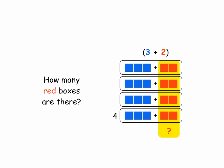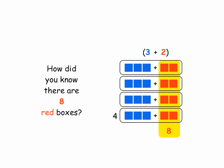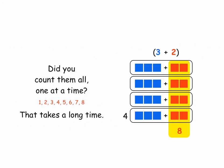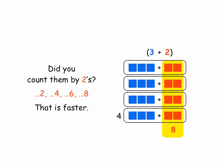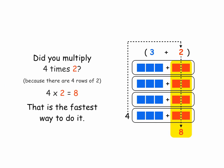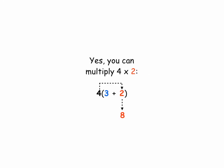How many red boxes are there? Yes, there are eight red boxes. How did you know? Did you count them all one at a time? That takes a long time. Did you count them by twos? Two, four, six, eight — that's faster. Or did you multiply four times two, because there are four rows of two? Four times two is eight. That's the fastest way to do it. Yes, you can multiply four times two and get eight.